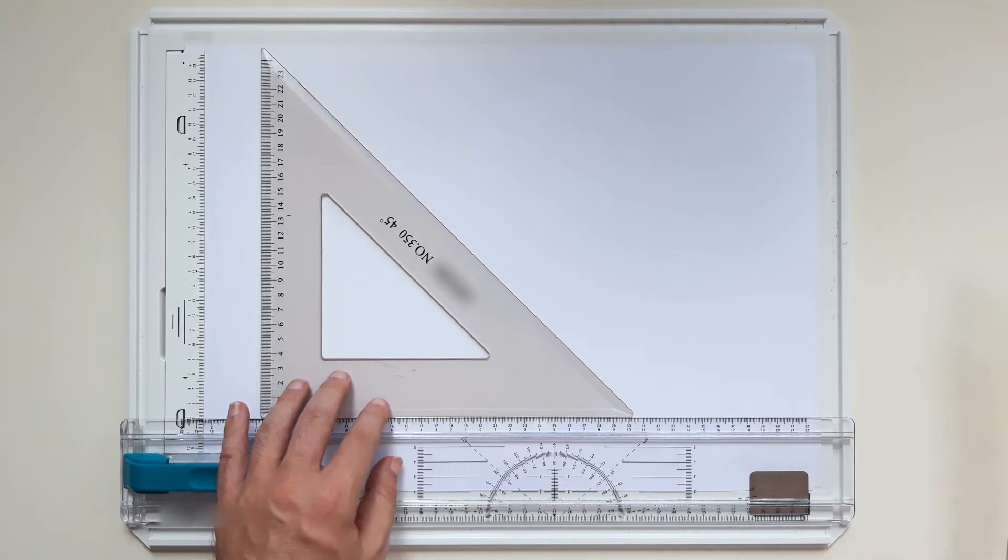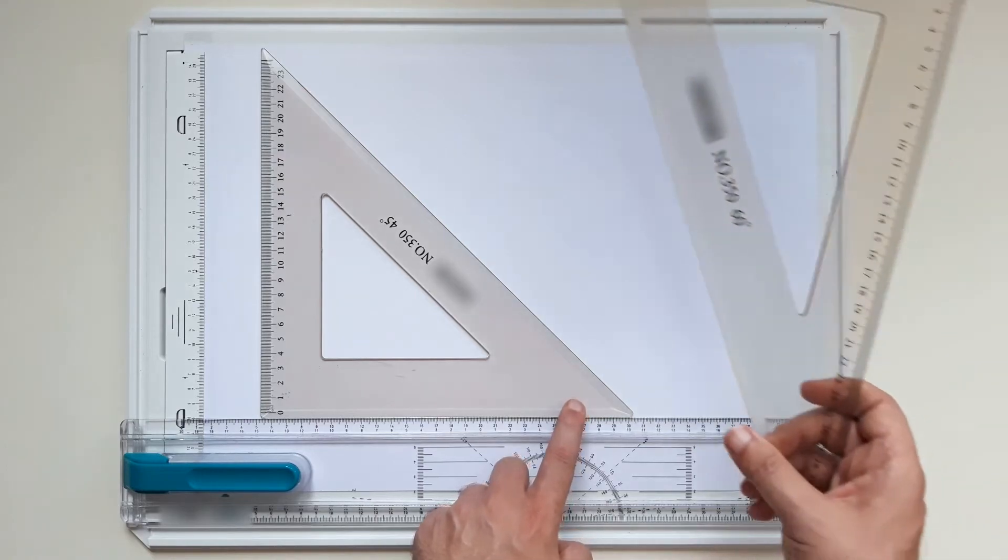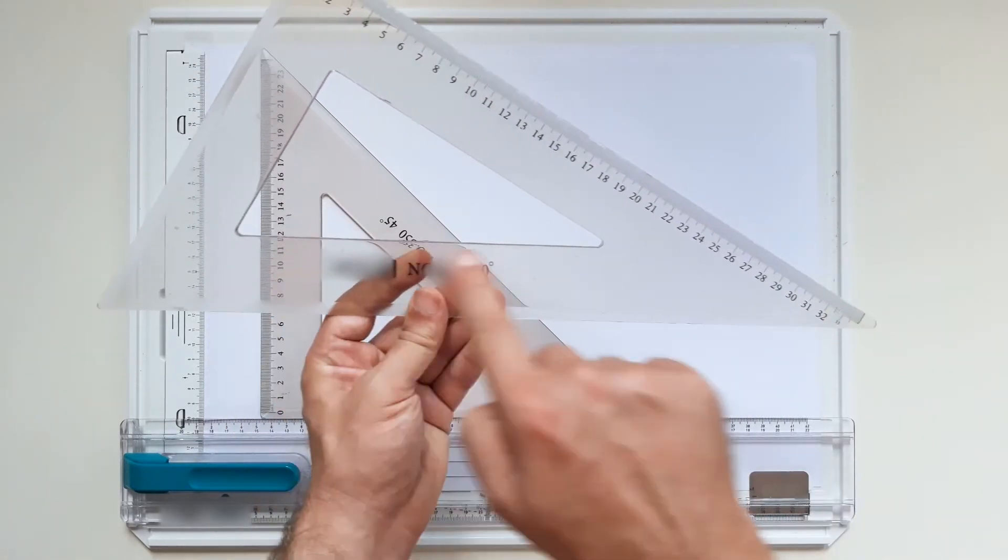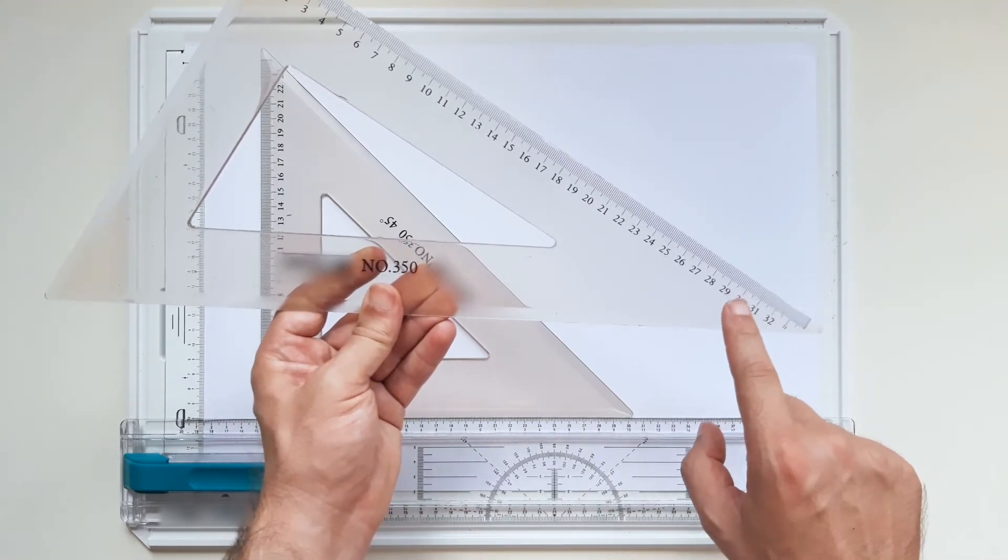This is the 45 degree set square, and it has a 45 degree angle over here. Also we have the 30 and 60 degree set square, which has an angle of 30 degrees over here.